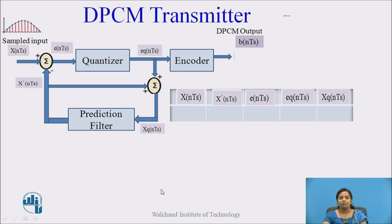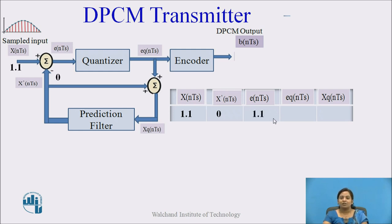Let us see one example. Suppose the input sample signal amplitude is 1.1, so X(NTs) = 1.1. Initially, the prediction filter output is 0. The comparator compares both signals: 1.1 − 0 = 1.1, which is the error signal. This error signal is quantized at the nearest standard level, which is 1. After that, this signal is encoded into 0, 0, 1. So for this step, the DPCM output is 0, 0, 1.